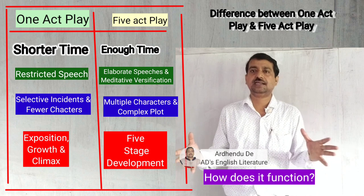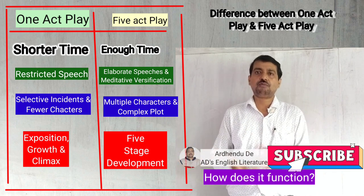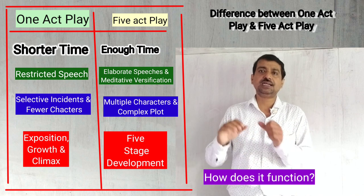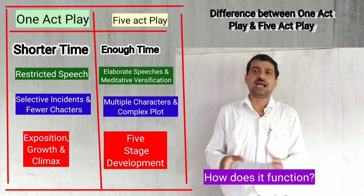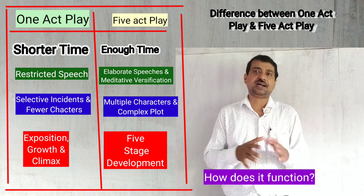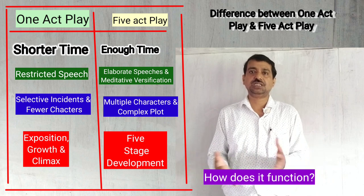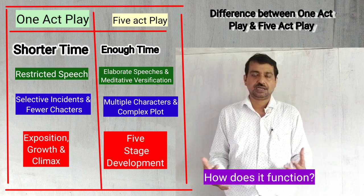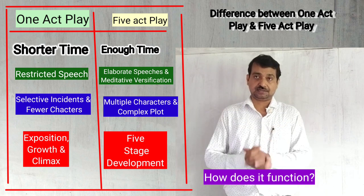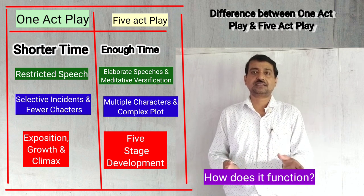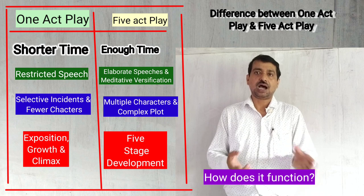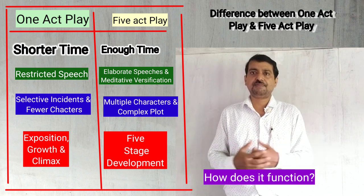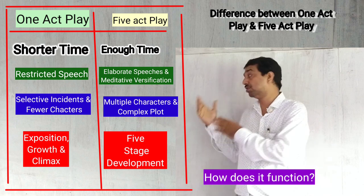As a short story cannot be expanded into a novel, a one-act play cannot dare to be a full-fledged five-act play. The functioning of the one-act play is quite different from the five-act play. A one-act play does not have the time for elaborate speeches or meditative versification; the selective incidents within a short span of time are to be acted with the purpose of turning them into a dramatic climax. A one-act play goes through three phases: exposition, growth, and climax.